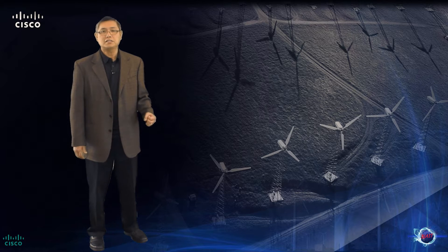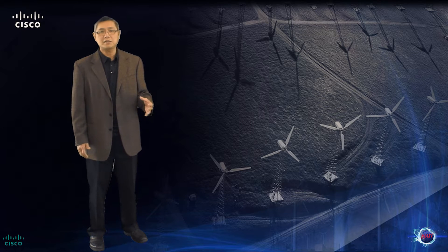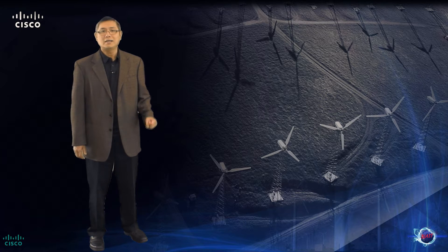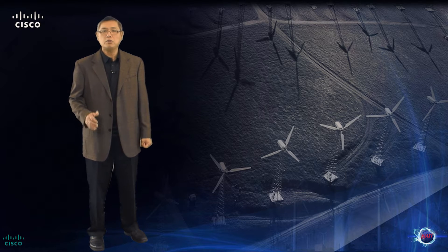When we discuss substation automation, we are referring to the ability of utilities to collect more information from the substation infrastructure, then use that information to make decisions more accurately and quickly to improve quality of service to their customers. The SCADA system is one of the many critical applications for utility operations. Most utilities today leverage SCADA as a polling mechanism to monitor and control many of the critical processes within the substation environment.